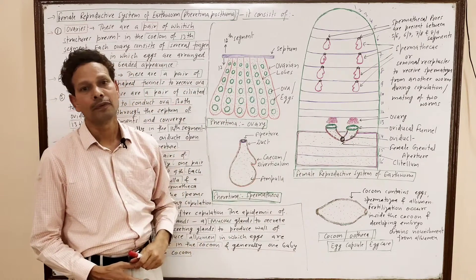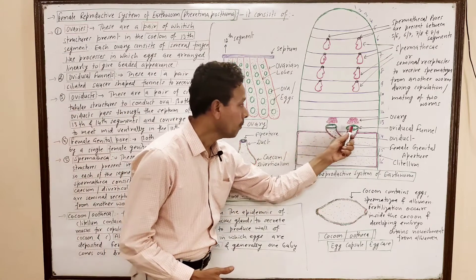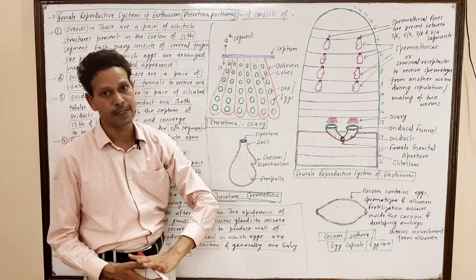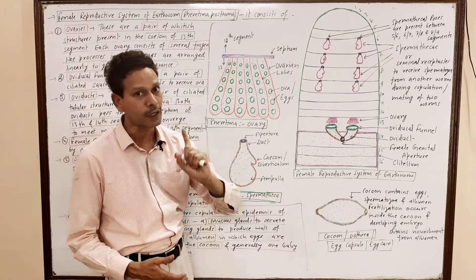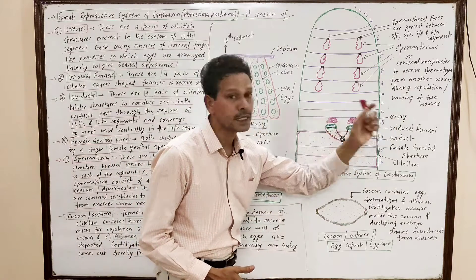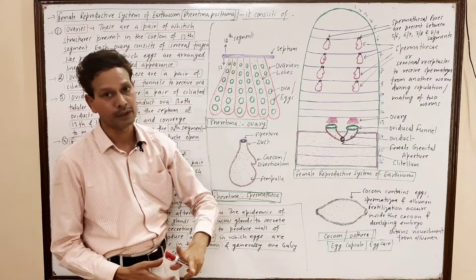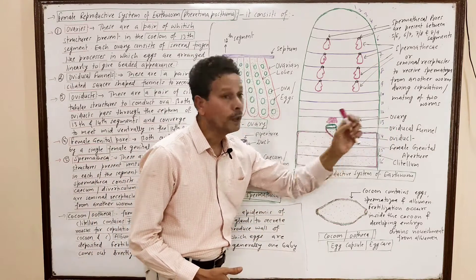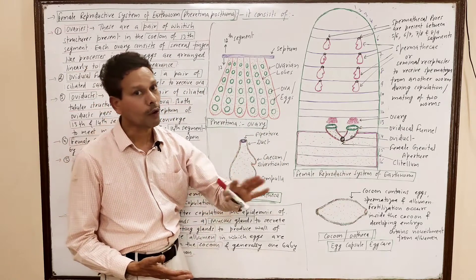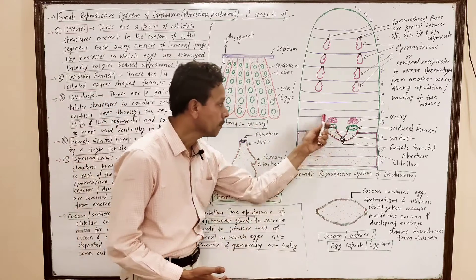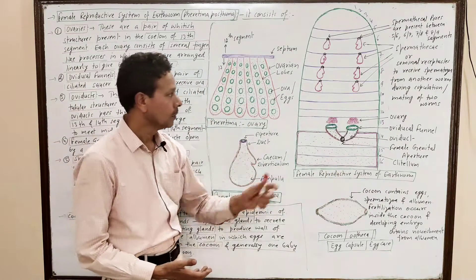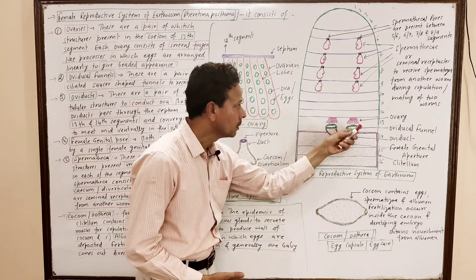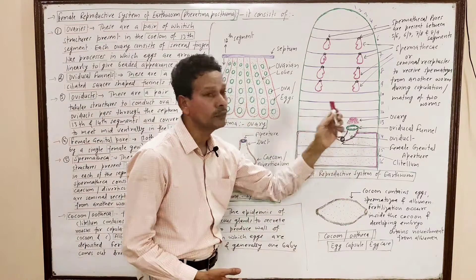The second part of the female reproductive system is a pair of oviducal funnels, also called ovarian funnels. These are also present mid-ventrally in segment number 13. These are ciliated, saucer-shaped structures which collect mature ova from the ovaries.